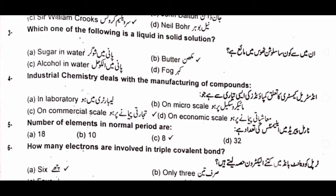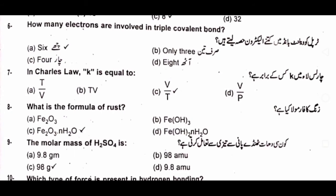Question number five: the number of elements in normal periods are A) 18, B) 10, C) 8, D) 32. The answer is C) 8. Question number six: how many electrons are involved in a triple covalent bond?